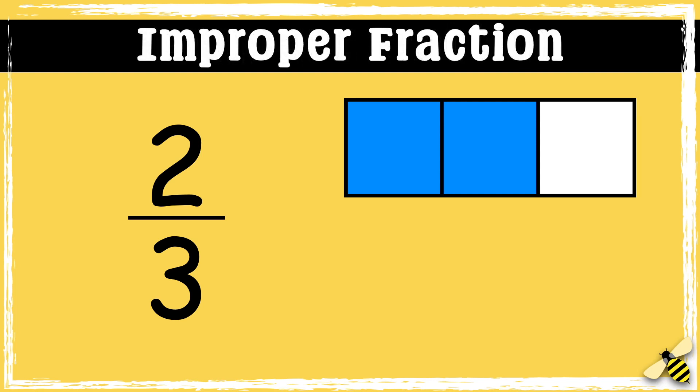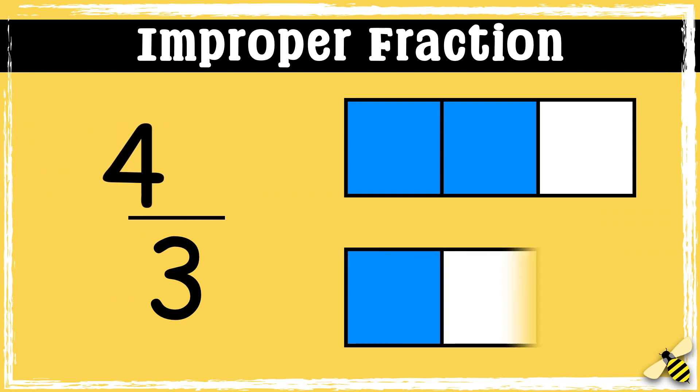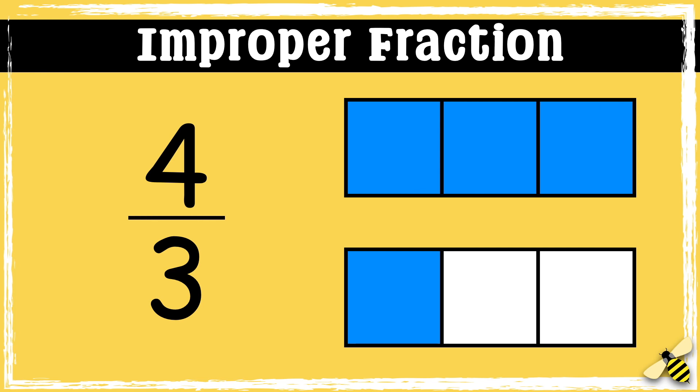An improper fraction is a fraction where the numerator is more than the denominator. Four-thirds is an example of an improper fraction. The whole is still split into three, but there are four parts. So an improper fraction is a fraction that's greater than one whole.